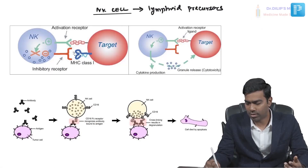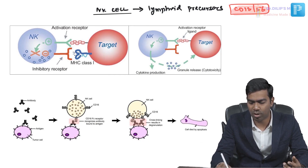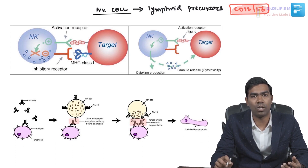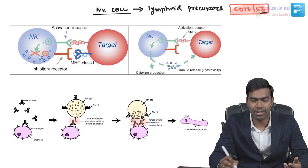The markers of natural killer cells are two: CD16 and CD56. A mnemonic to remember these markers is 'sexy 16 for natural killers' — so NK cell markers are CD16 and CD56. You also need to know the ways that NK cells exhibit their killing mechanism.